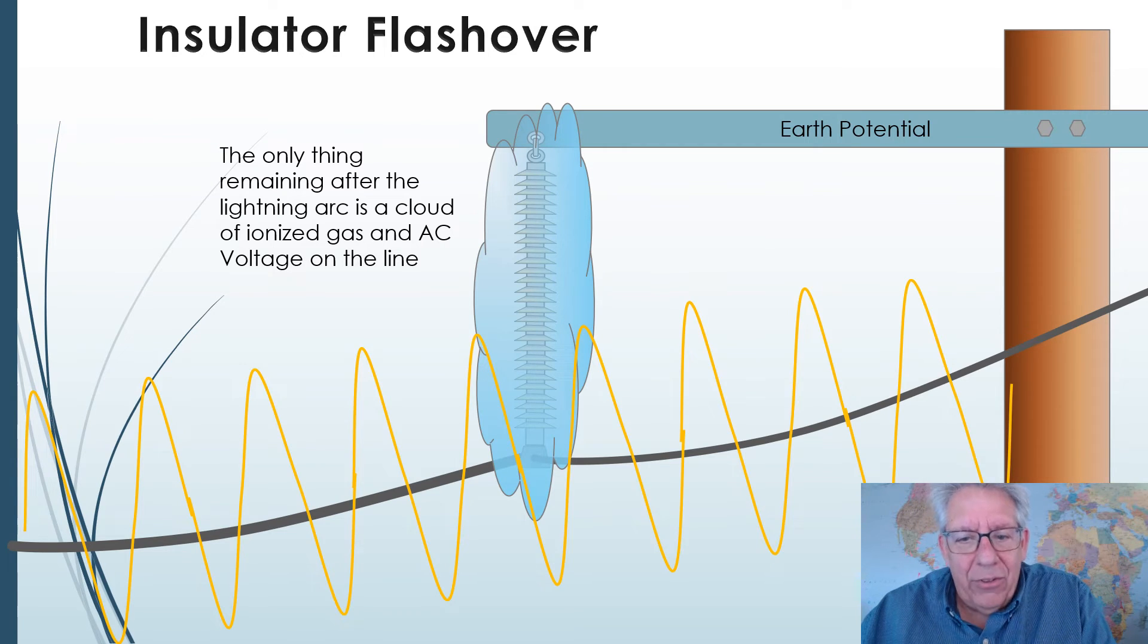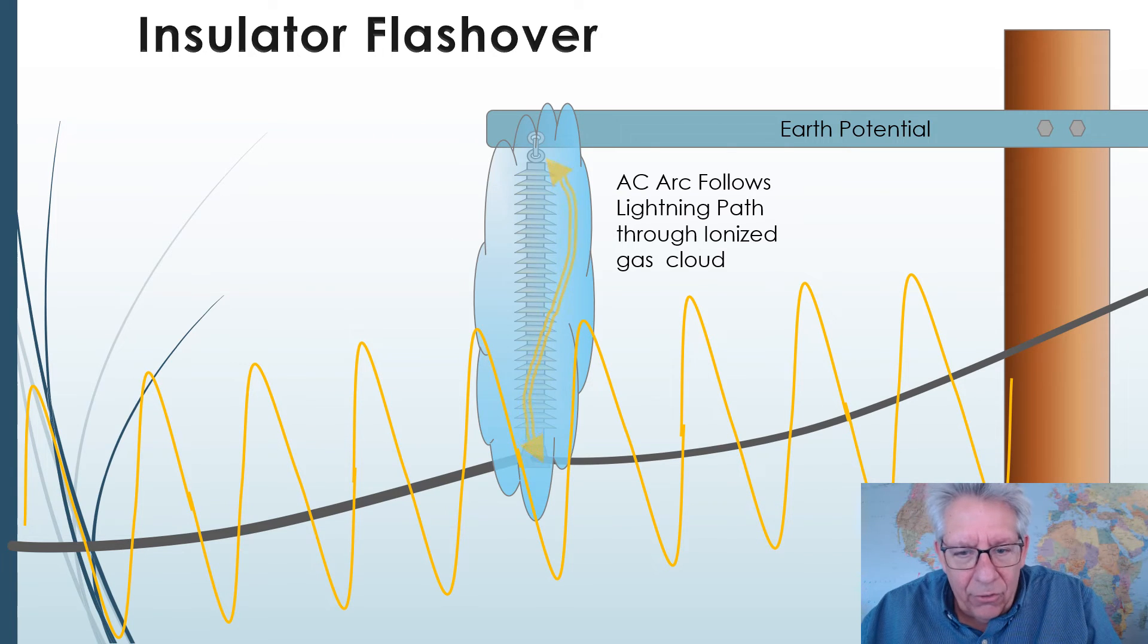Well, the AC voltage is still on the system. And what happens is that when it starts to reach peak voltage, it senses this low conductivity air around the insulator, and then it flashes over also. So the lightning flash is already completely gone, and then the AC follows it.